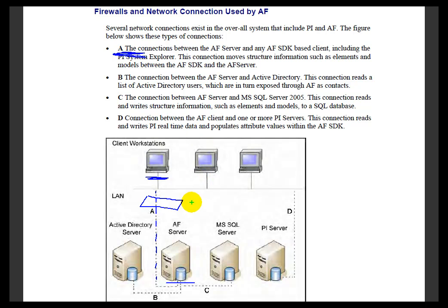When it comes to Scenario B, we're talking about if there is a firewall between your Active Directory Server and the AF Server. If you've got a firewall at that point, you're looking at Scenario B — that connection between the AF Server and Active Directory — then take a look at what's documented there, and so on and so forth.